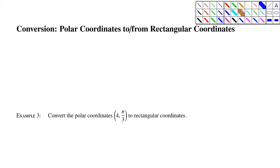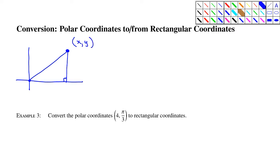Let's look at converting polar coordinates to and from the rectangular coordinate system. The way to master this topic is to memorize a key diagram that incorporates all facets of polar and rectangular coordinates. A point x, y in rectangular coordinates can also be thought of as (r, θ) in polar coordinates, and the question is what equations convert between them.